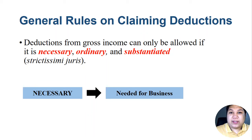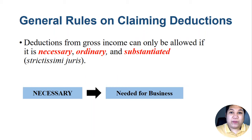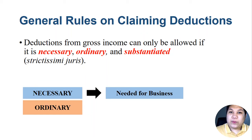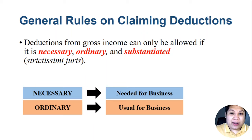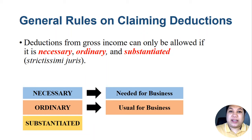For example, if you run a small store or carinderia and you hire persons to assist you and pay them wages, that is a necessary expense — it is needed for your business. Salaries are a necessary expense for a business. When we say 'ordinary,' this means it is usual for the business. It is usual to hire people to work for you, so paying salaries is ordinary.